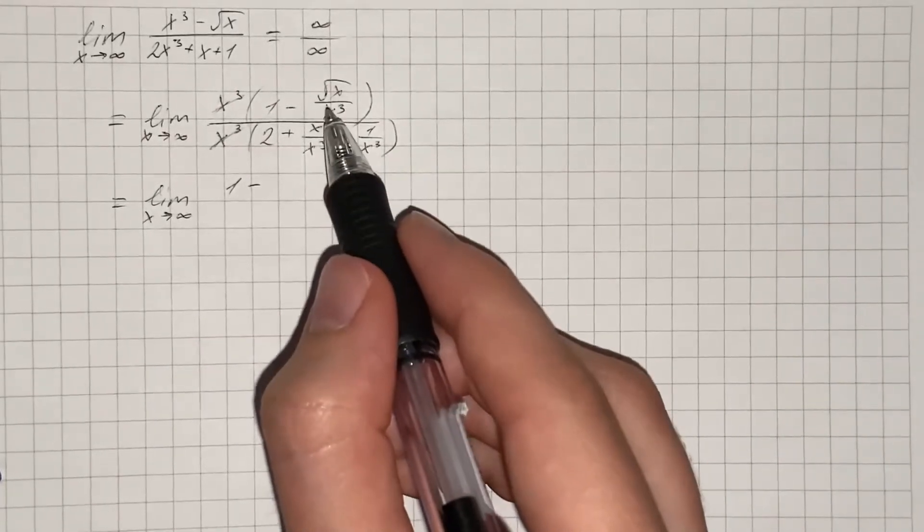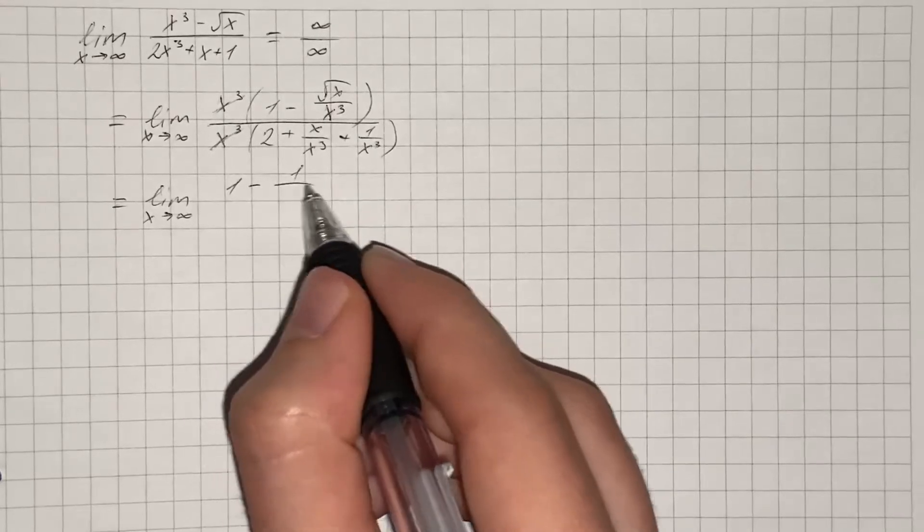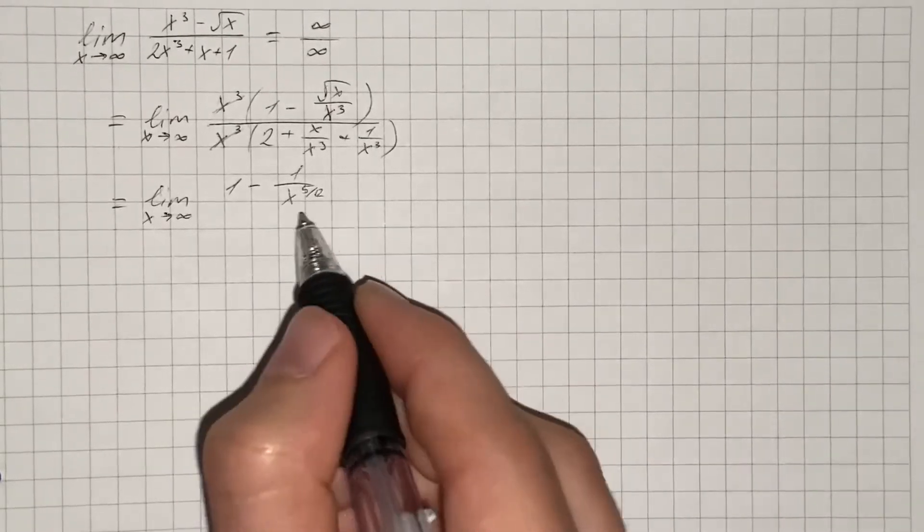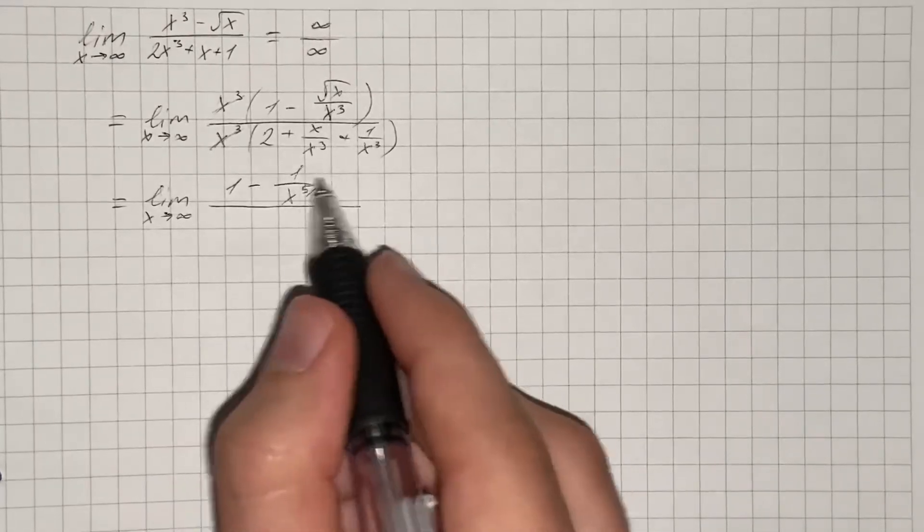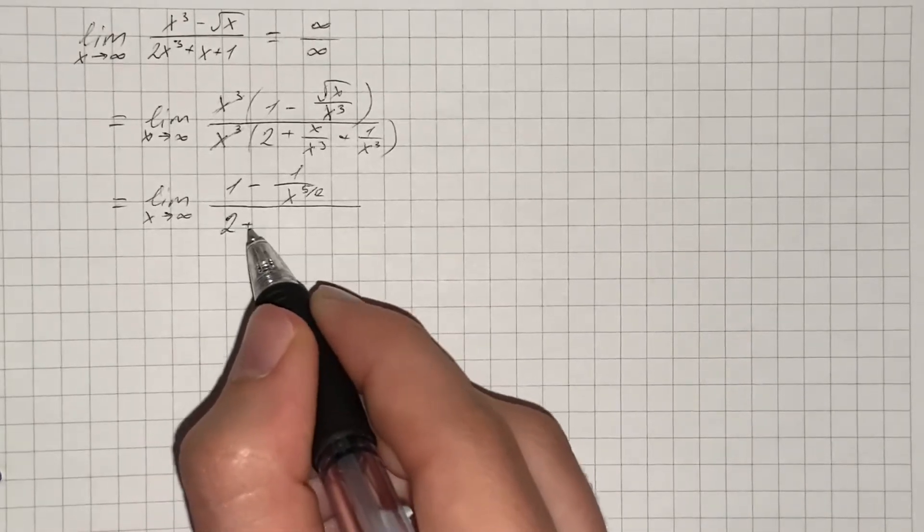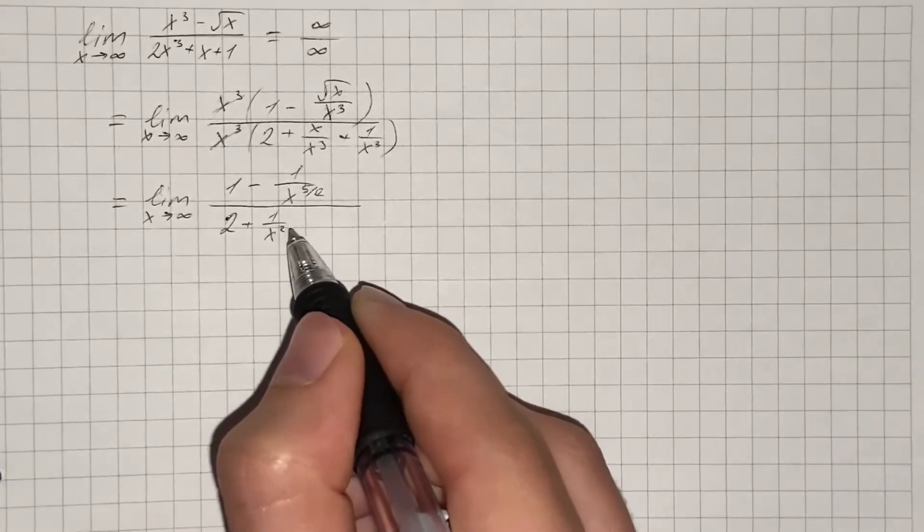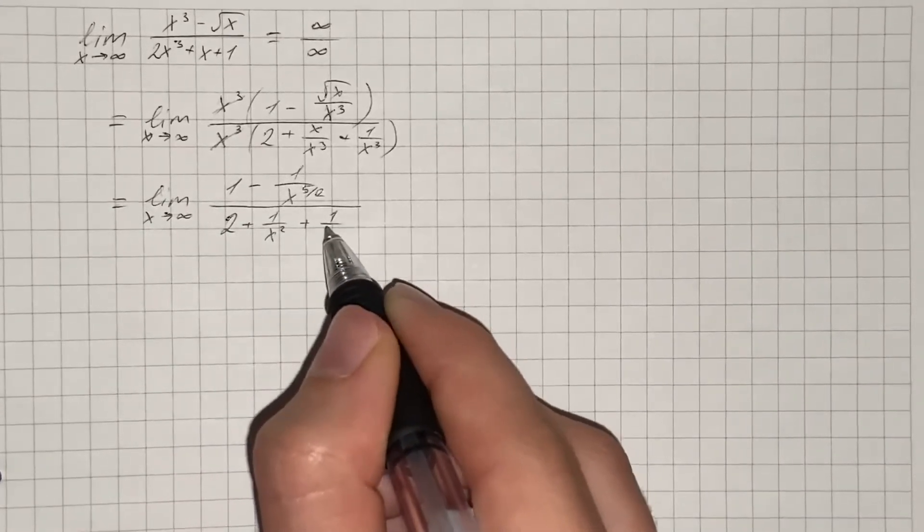This fraction we're going to rewrite as 1 over x to the power of 5 over 2, and over 2 plus, we cancel out x to get 1 over x squared, and plus 1 over x cubed.